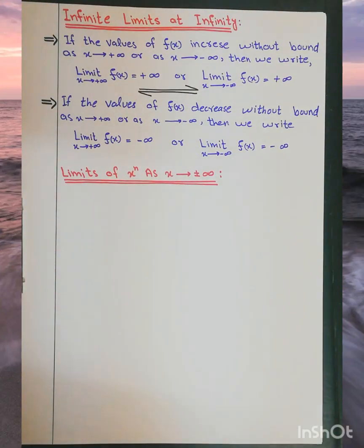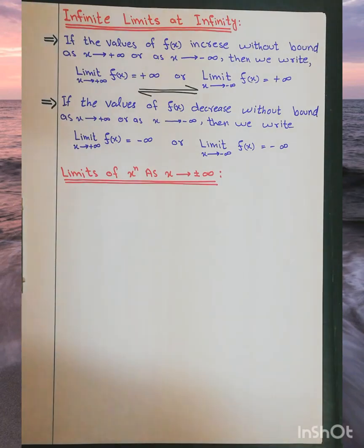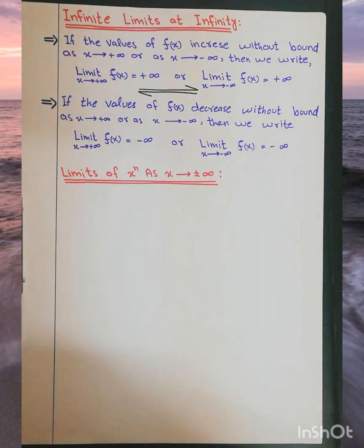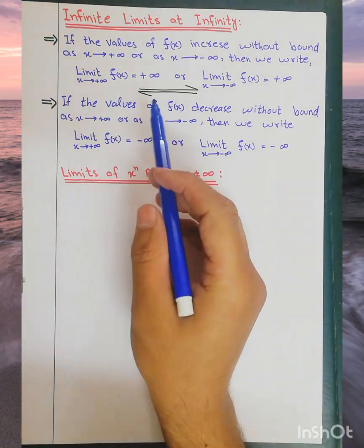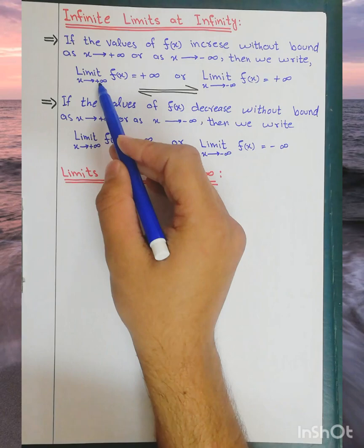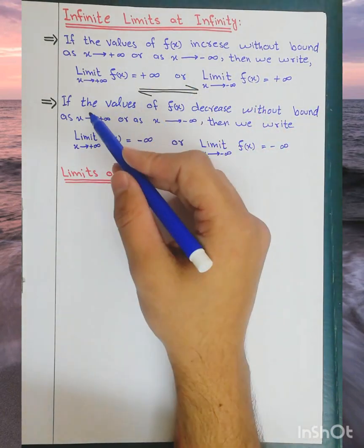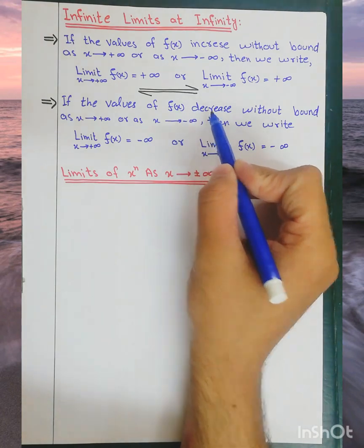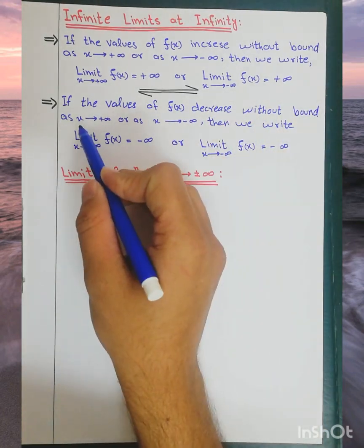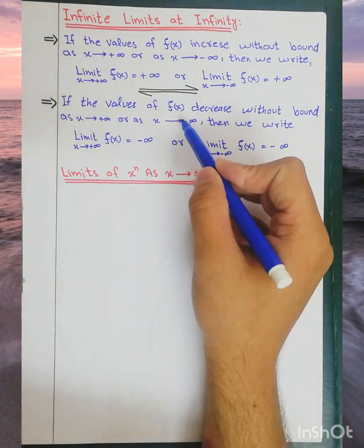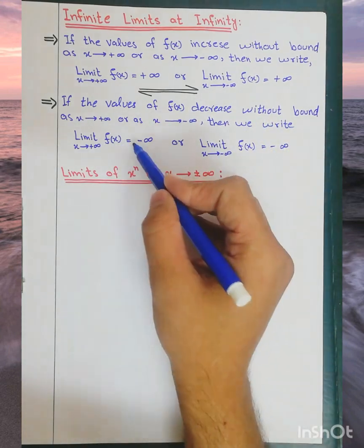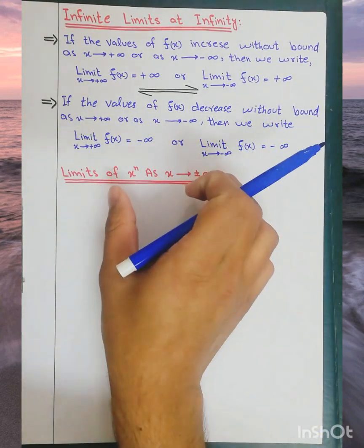Infinite limits at infinity: if the values of f(x) increase without bound as x approaches positive or negative infinity, then we write f(x) equals positive infinity. If the values of f(x) decrease without bound as x approaches positive or negative infinity, then we write the answer as negative infinity.